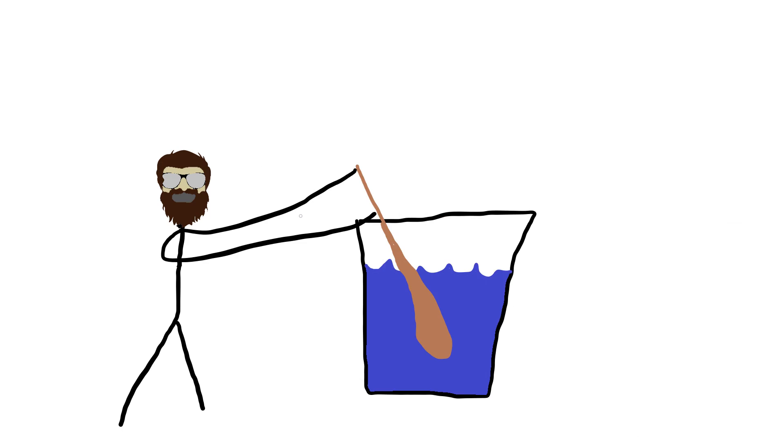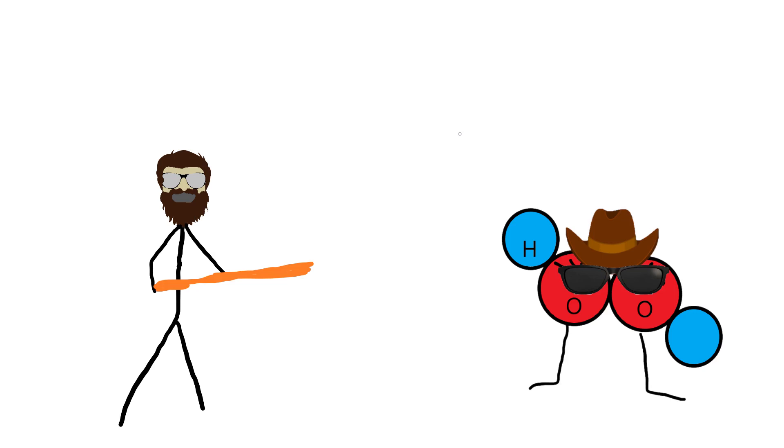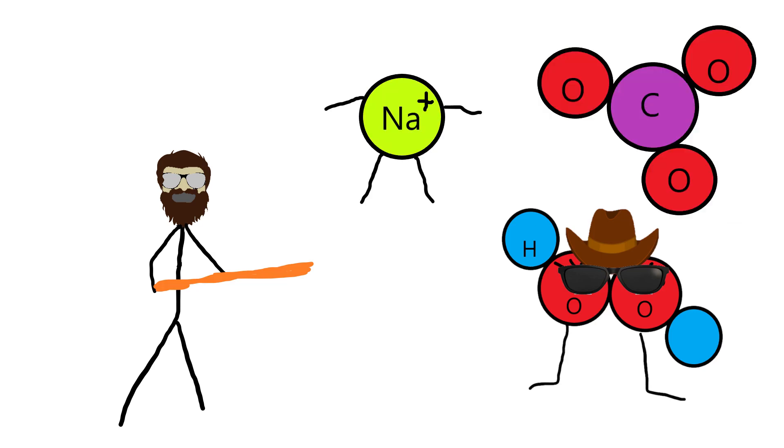And when it is mixed with water, sodium percarbonate yields hydrogen peroxide, sodium cations, and carbonate. We've already talked about the benefits of the hydrogen peroxide.